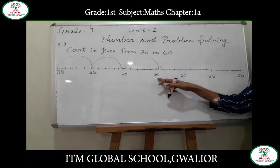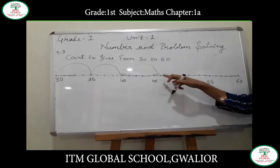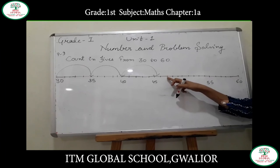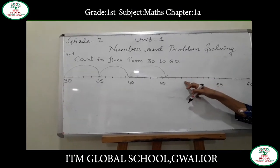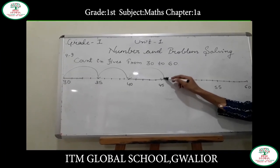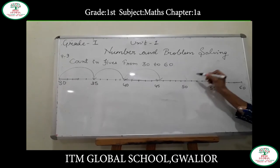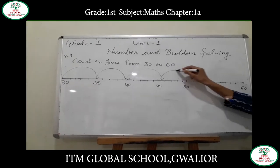Again, after 45, skip 4 numbers: 46, 47, 48 and 49. Skip them and after 49, you will come directly to 50.